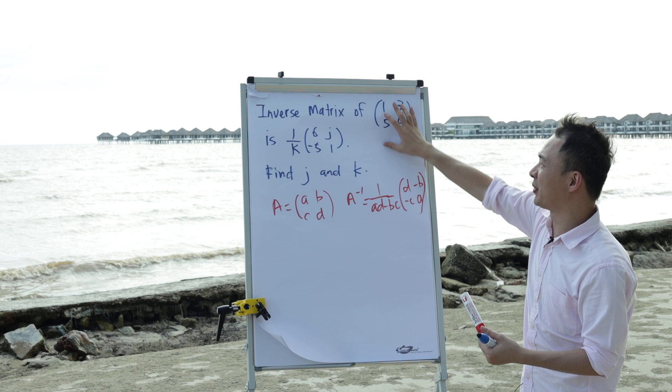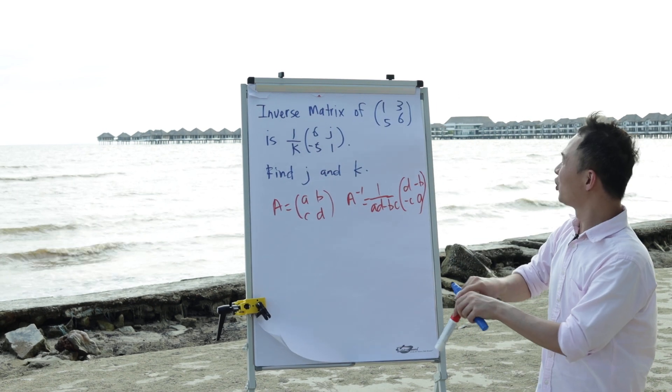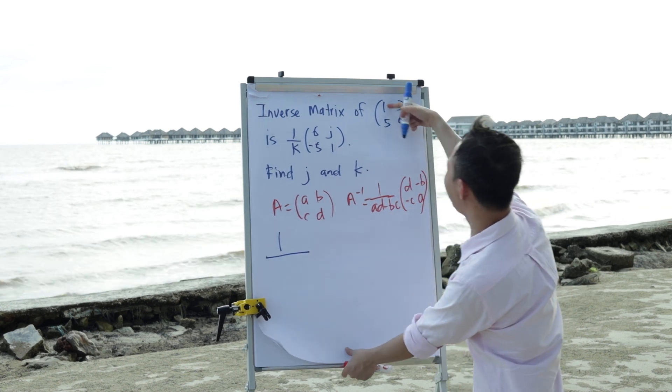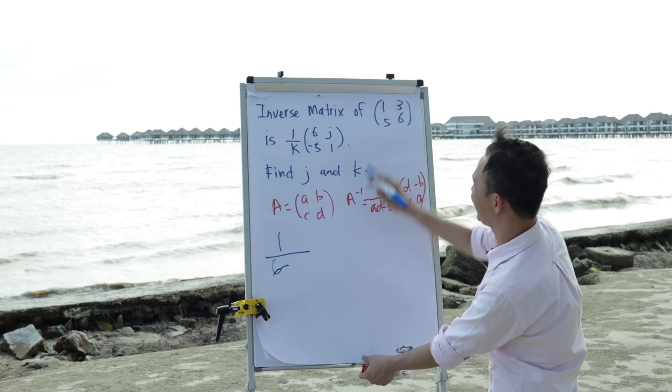So we will use the formula for this matrix. What I will do is 1 over ad, that means a multiplied by d will be 6, minus b multiplied by c will be 15.